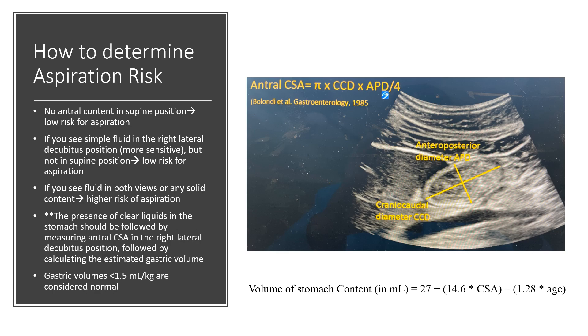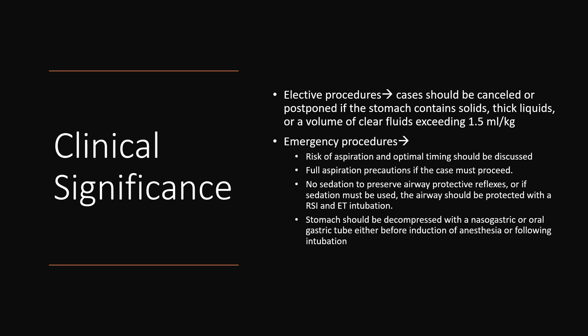The clinical significance of gastric ultrasound depends on the urgency of surgery. For elective procedures, cases should be cancelled or postponed if the stomach contains solids, thick liquids, or a volume of clear fluids exceeding 1.5 mL/kg. In the emergency setting, the risk of aspiration and optimal timing should be discussed with the patient and proceduralist. The anesthetic plan should include full aspiration precautions: no sedation if possible to preserve airway protective reflexes, or if sedation is required, the airway should be protected with rapid sequence induction and endotracheal intubation. The stomach should be decompressed with an NG or OG tube either before induction or following intubation.